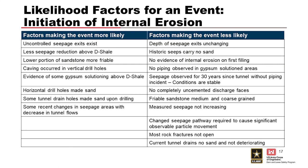Here's an example of the two-column table format for more likely and less likely factors — in this case for an event involving initiation of internal erosion through an embankment dam abutment into a drainage tunnel. Key factors can be bolded, and similar tables are prepared for each event or node of the event tree.